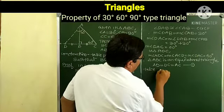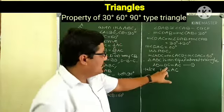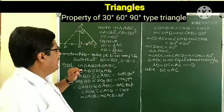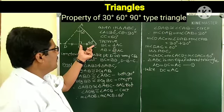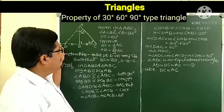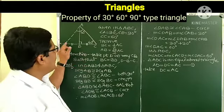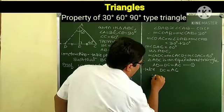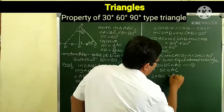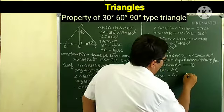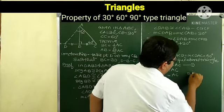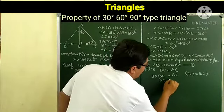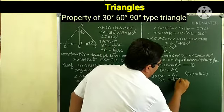In triangle ADC, measure of angle ADC equals measure of angle ACD equals measure of angle DAC equals 60 degrees. Therefore triangle ADC is an equilateral triangle, so AD equals DC equals AC — let this be step 1. Since BD equals BC by construction and DC equals AC, we get BC equals 1 upon 2 AC.